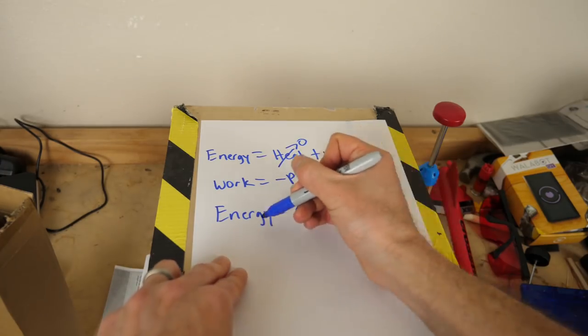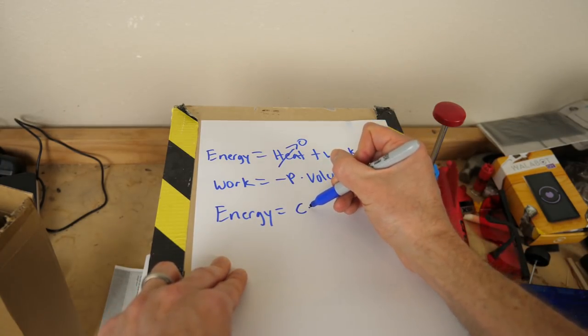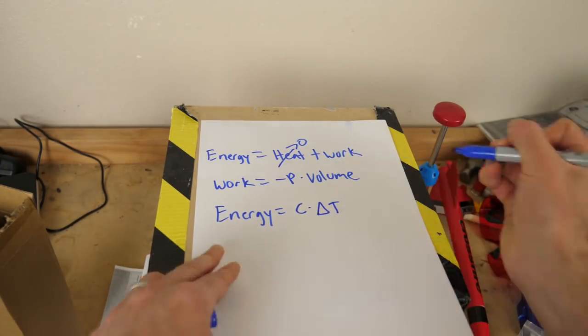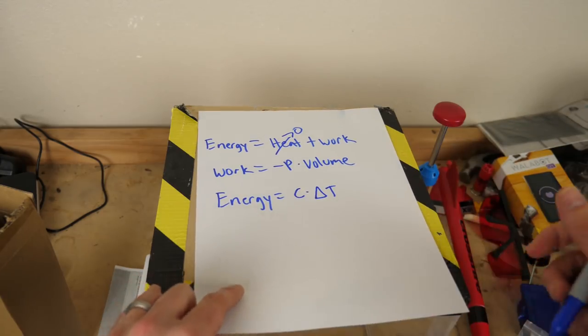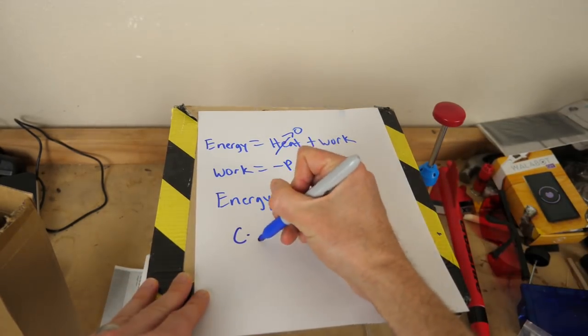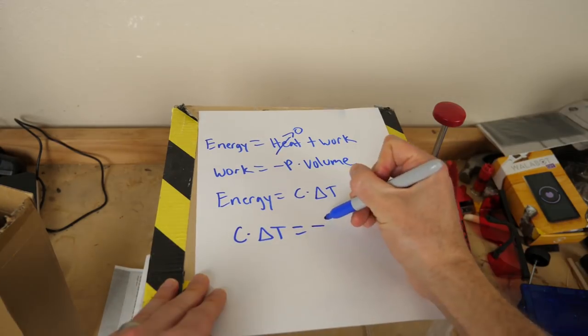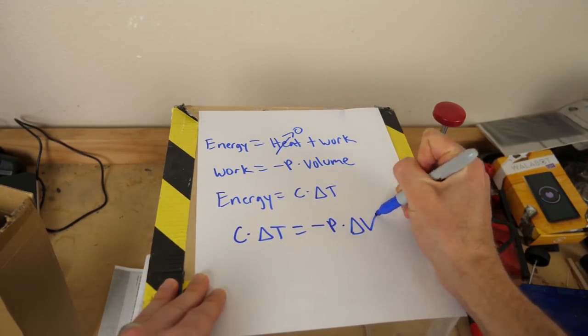And the change in work is just equal to the pressure times the change in volume. And in general, the change in energy of a system is just equal to some constant times the change in temperature. So basically the final equation you get is some constant times a change in temperature equals minus the pressure times the change in volume.